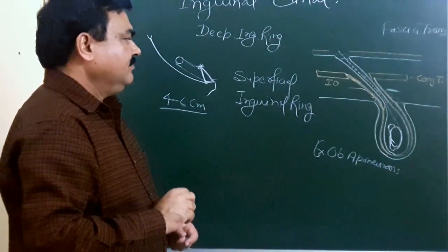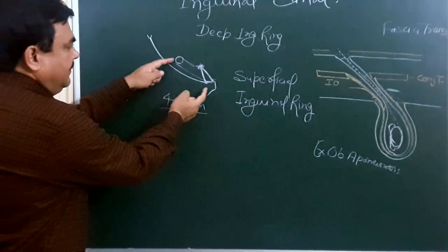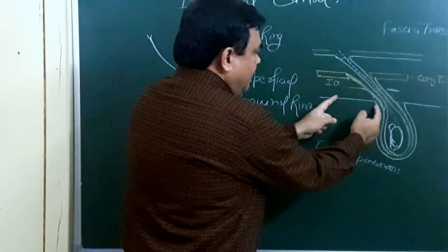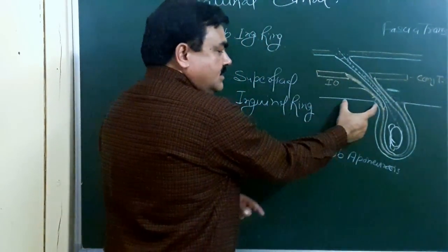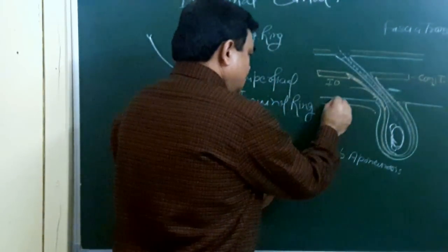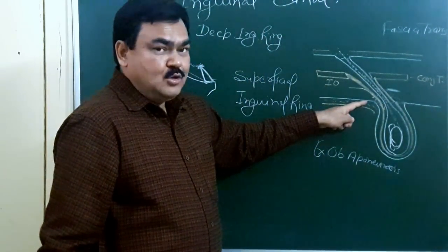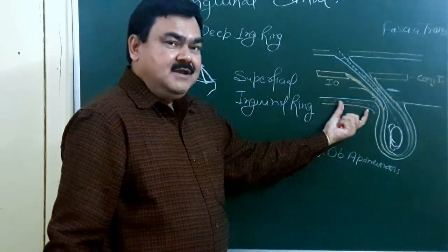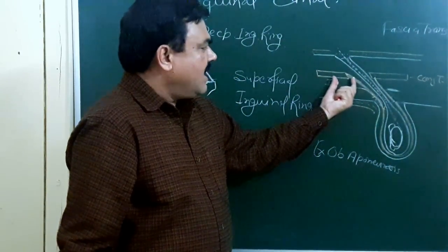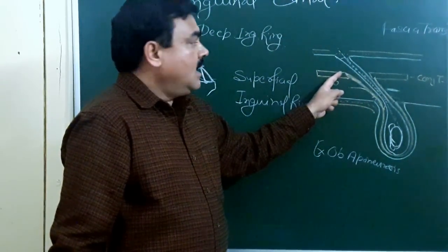The ilio-inguinal nerve passes through the superficial inguinal ring. The anterior boundary of this canal — from here to here — is formed throughout its whole length by the skin, superficial fascia, and external oblique aponeurosis. In addition, the anterior one-third is also formed by the internal oblique muscle.